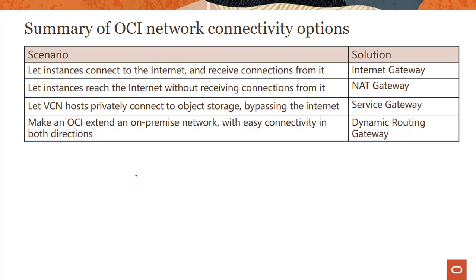Those are the four gateways with different distinct design patterns. In the next module, we'll look at a couple of demos where we create an internet gateway and a NAT gateway. Subsequently, we'll also talk about peering and transit routing, which completes the set of all network connectivity options available with the OCI virtual cloud network service. Thanks for watching this lecture — please join the next lecture where we do demos on these gateways.